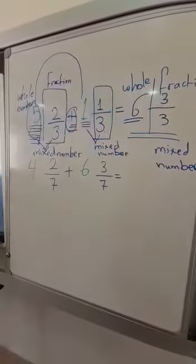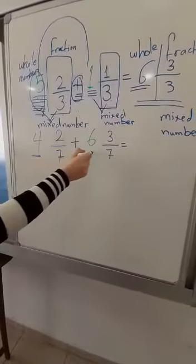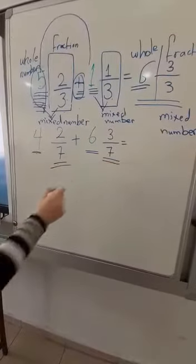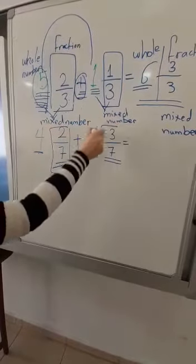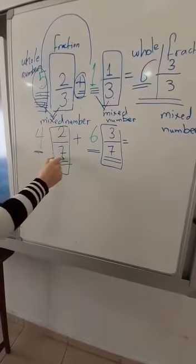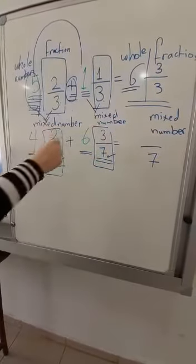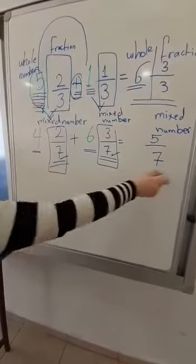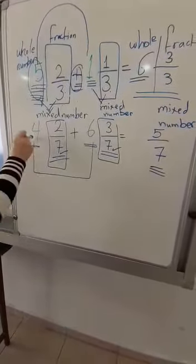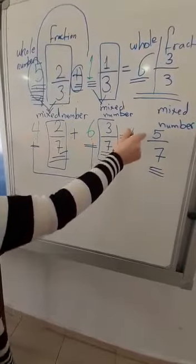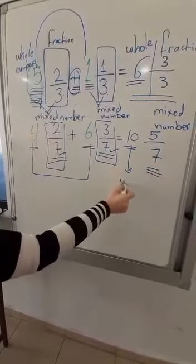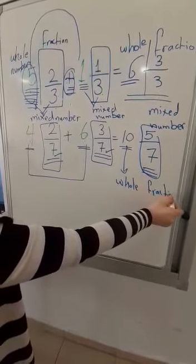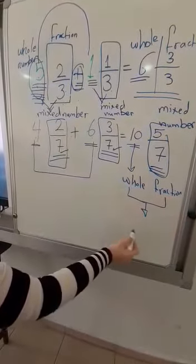Another example. Here we have whole number four and six as the second whole number. Here we have the first fraction and the second fraction. At first, we add the two fractions. We keep the same denominator — seven — then add the numerators: two plus three equals five. Then we add the whole numbers: four plus six equals ten. We have a whole number and a fraction, so we can say this is a mixed number.